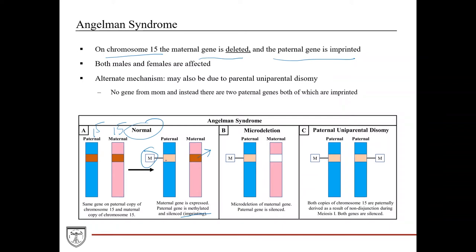Because it's sex-specific imprinting does not mean this is a sex-driven inheritance like X-linked recessive or X-linked dominant — both males and females are affected. The first mechanism is microdeletion: the paternal side is methylated, which is normal for this gene, but the maternal gene has been microdeleted. Since both genes are now not being expressed, you develop Angelman syndrome.